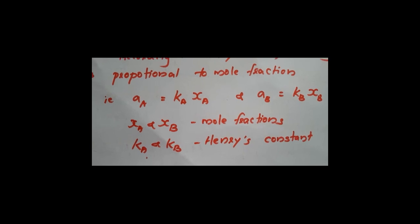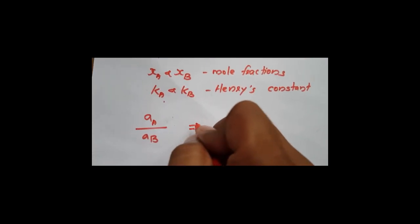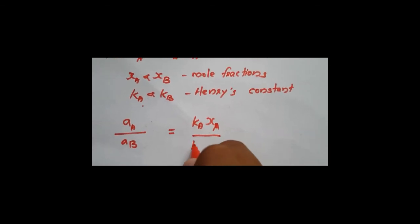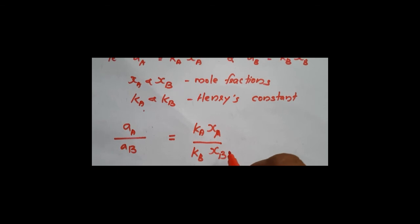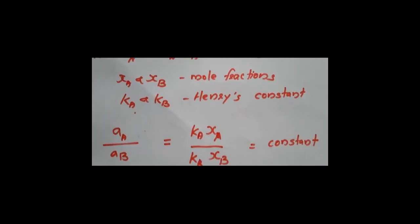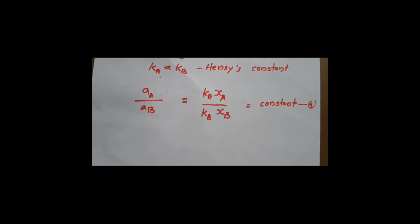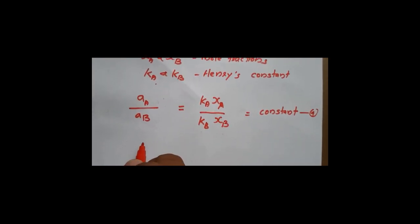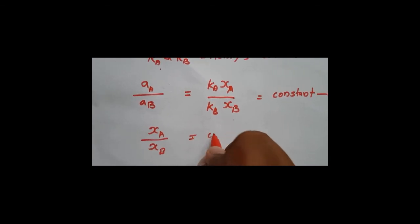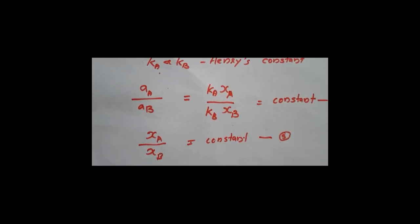Substituting into equation 3, AA / AB becomes (KA × XA) / (KB × XB). Since KA and KB are constants, equation 4 gives XA / XB equal to a constant — that is equation number 5.